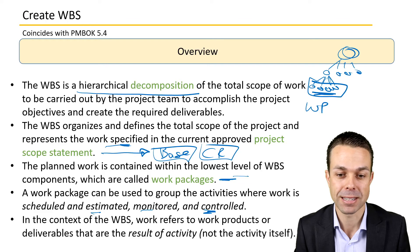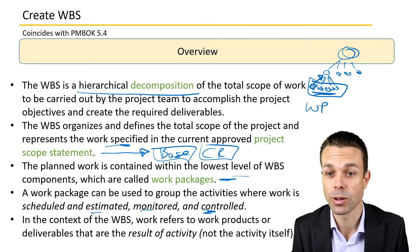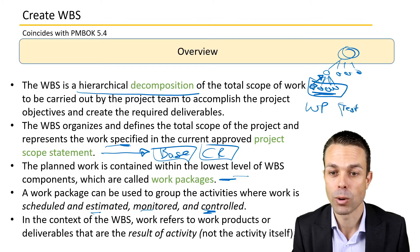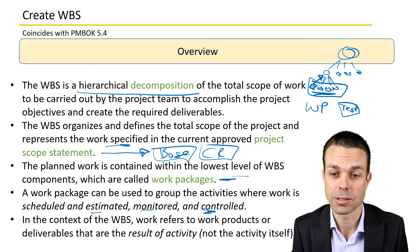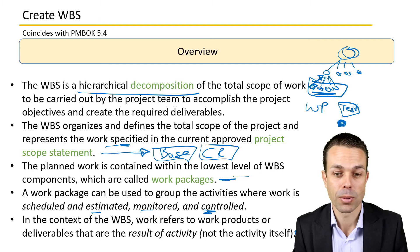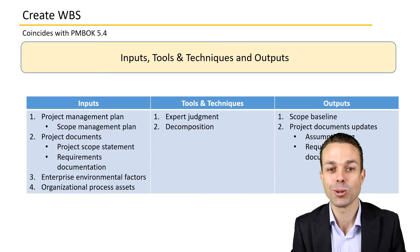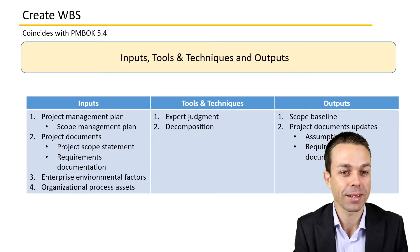In the context of the Work Breakdown Structure, the work refers to work products or deliverables that are the result of activity — not the activity itself. These might be pieces of a feature, so we're not saying we're testing, but rather what are we testing — this particular item that we're delivering. We'll have activities associated with that, but these are the work products or deliverables that are the result of that activity.